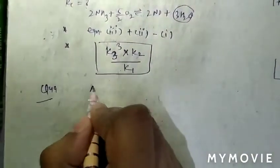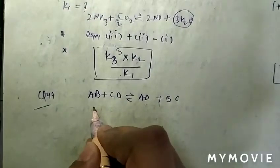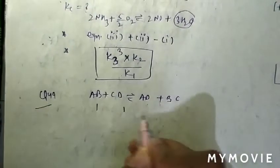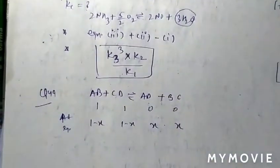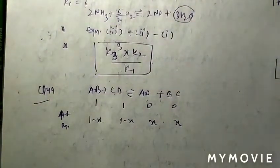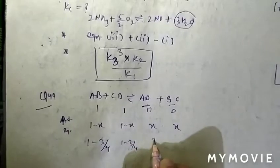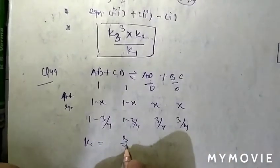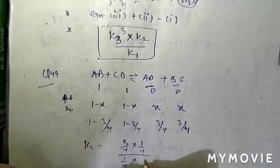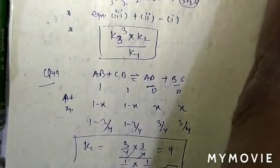Question 49: AB + CD forms AD + BC. Initial moles are one each, so the ICE table gives 1−x, 1−x, x, x. Three-quarters of a mole each of reactants is converted, so at equilibrium it is 1−3/4, 1−3/4, 3/4, and 3/4. Kc = (3/4)(3/4) / (1/4)(1/4) = 9. Question 49, option D is correct.